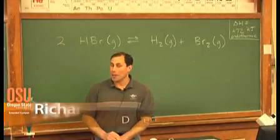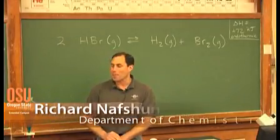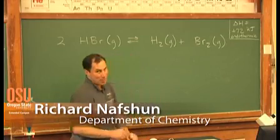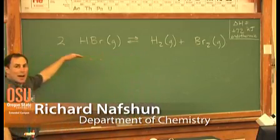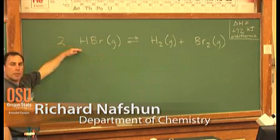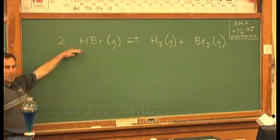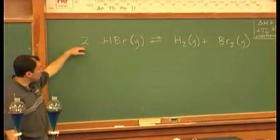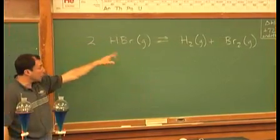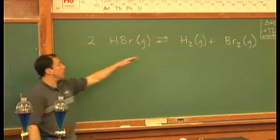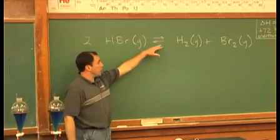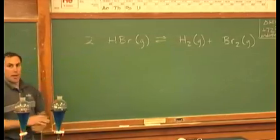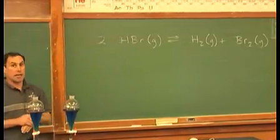We're talking about equilibrium, and I brought in a little apparatus and a sample problem. I wrote a reaction up on the board for the decomposition of HBr: two HBr go to hydrogen and bromine gas. I went ahead and put forward and reverse arrows. Envision a bulb of gas with all three present — perhaps it's at equilibrium.